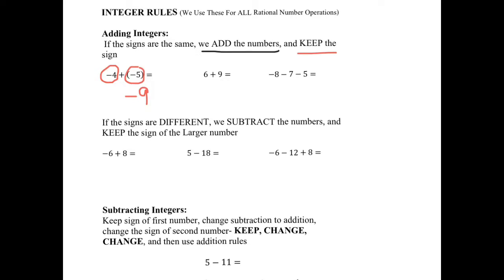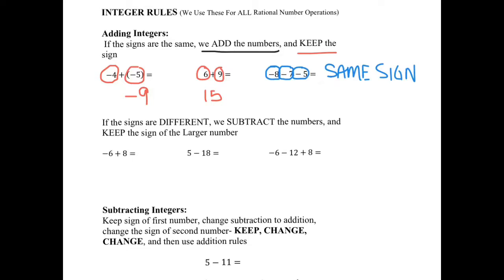Looking at the second example, I have 6 and 9 addition. The signs are the same — there's no sign in front of them, which means they're positive. 6 plus 9 is 15. For the next example, I circle the numbers — remember a number includes the sign in front of it. I have negative 8, negative 7, and negative 5. Are all three signs the same? Yes. Same signs: add and keep. 8 plus 7 is 15, plus 5 is 20. Keep the sign, so my answer is negative 20.